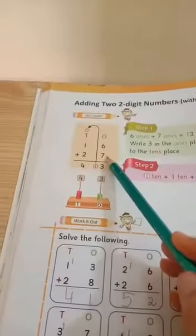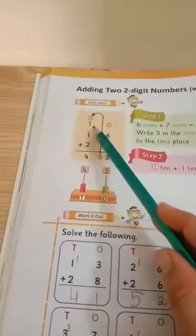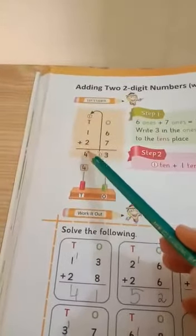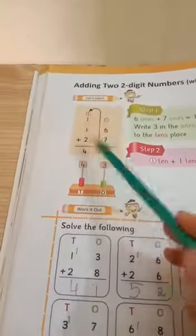6 and 7, 7 and 6, 13. 1 carry kia. Then 1 plus 2 plus kia 3 and 1, 4. 43. Solve the following.